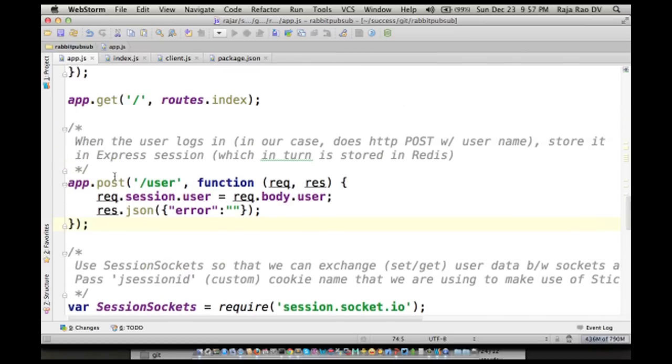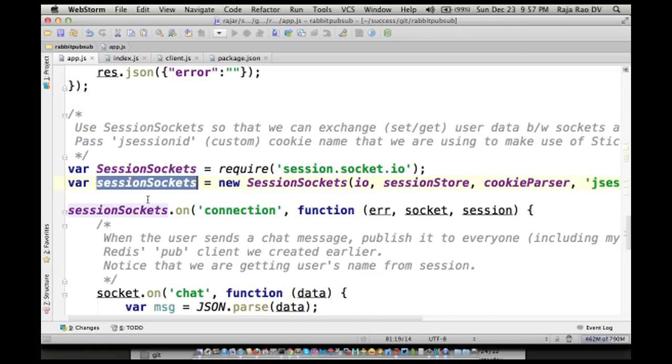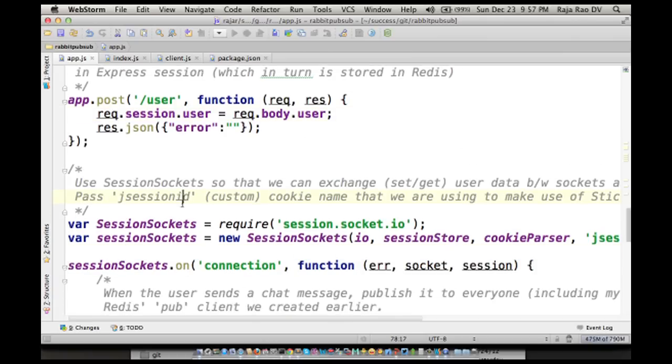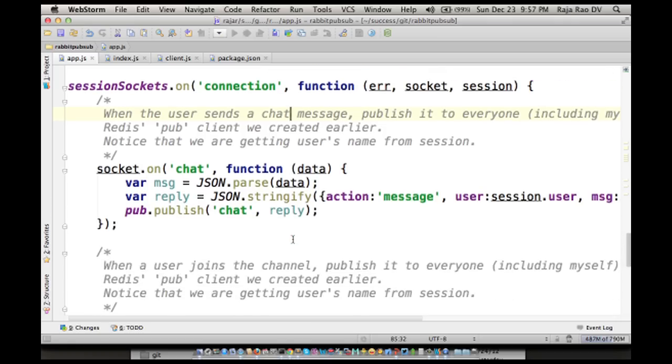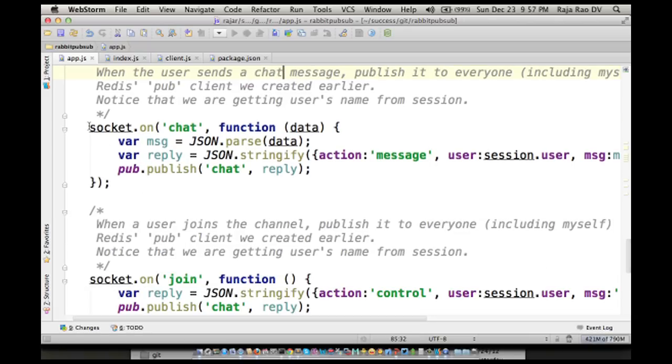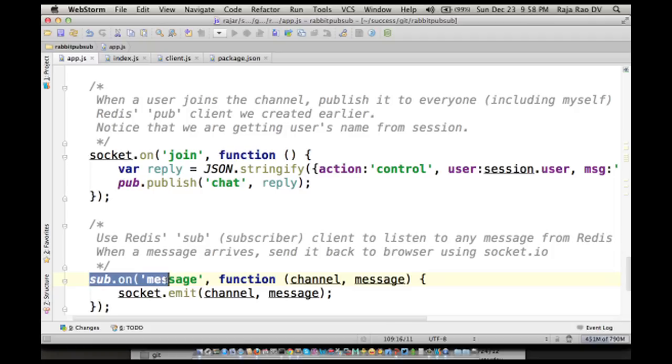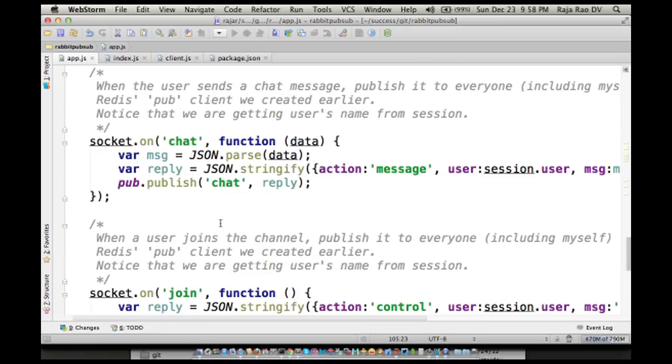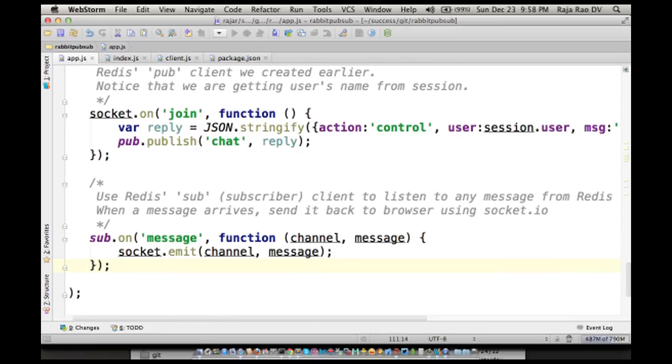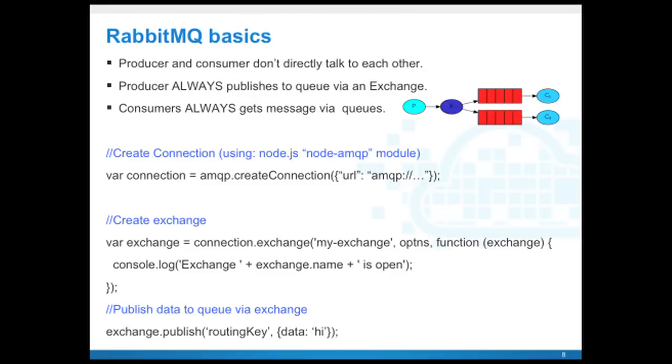Over here we are setting up all the middlewares for Express, including cookie parser and express sessions in order to have sticky sessions. We are listening to an HTTP POST to /user, so whenever a user logs in we store that in a session. Then we're setting up session sockets to grab this session from express sessions and give it to Socket.io. We have two functions: one is listening for chat messages and the other listening for user joining. The third one is waiting for any messages from Redis and sending it back to the browser. We'll be changing these three functions to use RabbitMQ's counterparts.